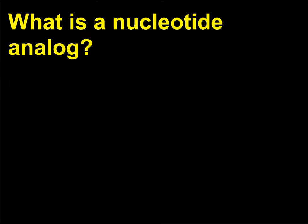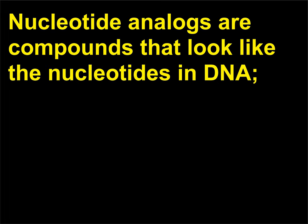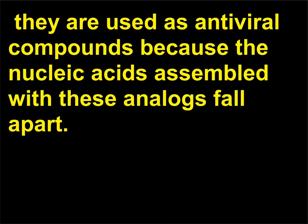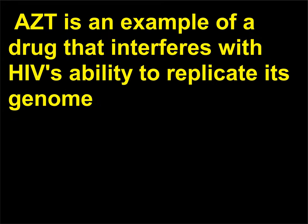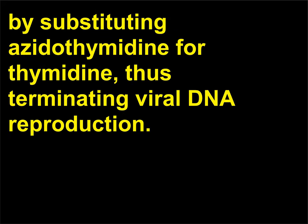What is a nucleotide analogue? Nucleotide analogues are compounds that look like the nucleotides in DNA. They are used as antiviral compounds because the nucleotides assembled with these analogues fall apart. Therefore, the viral genome cannot be copied and the infection cycle is broken. AZT is an example of a drug that interferes with HIV's ability to replicate its genome, by substituting azidothymidine for thymidine, thus terminating viral DNA reproduction.